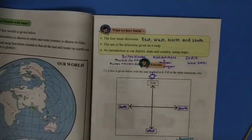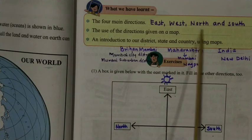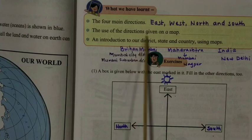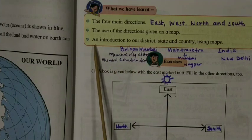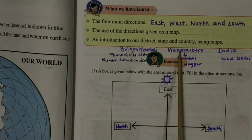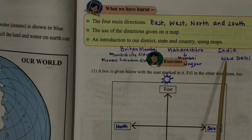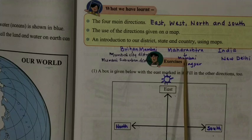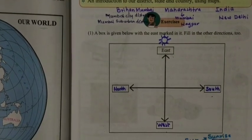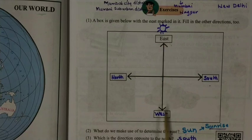From this lesson we learned: first, the four main directions — east, west, north, and south. Directions on a map are very useful to us. We also learned about our district Brihanmumbai, our state Maharashtra, and our country India. We also learned that capitals are shown by symbols: capital of India is New Delhi, and capital of Maharashtra is Mumbai, with Nagpur as the second capital.